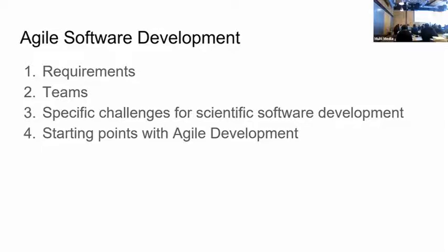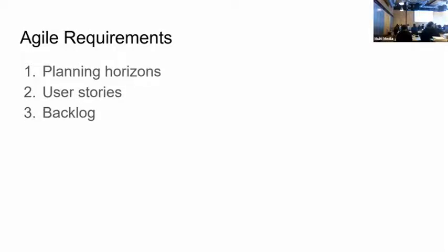I'll talk specifically about how agile development handles requirements, about the teams, some specific challenges for scientific software development, and where to start if you haven't tried agile before. Is there anybody here who has no idea what agile software development is? One way to do it would be to talk you through the process, but when people do that it's really easy to go 'that doesn't suit us at all.' So I'm going to try a different approach.